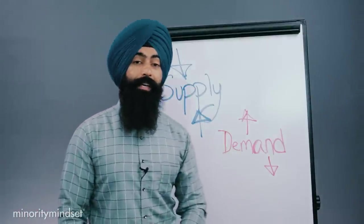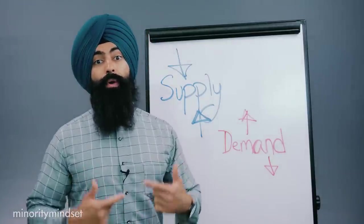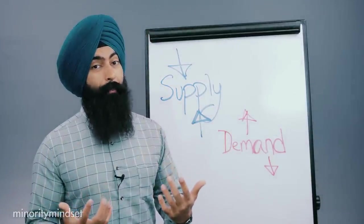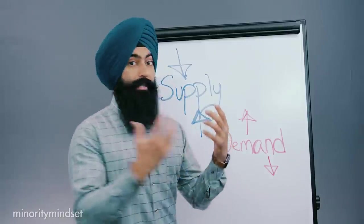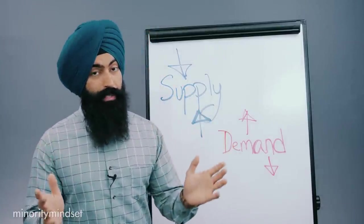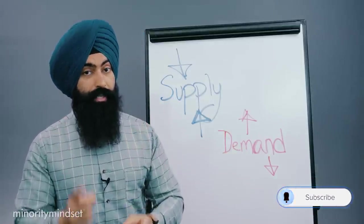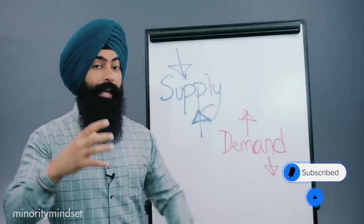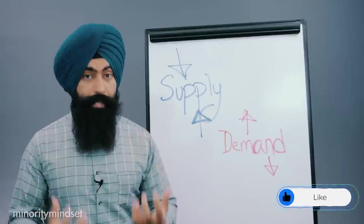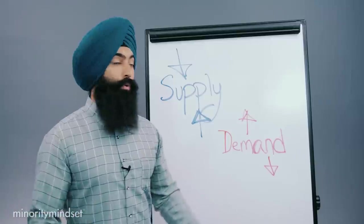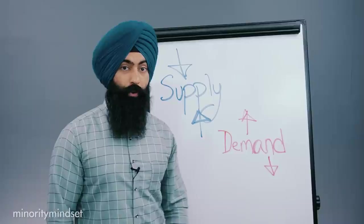Then on the demand side, you want to pay attention to now, how incentivized are people to go out and buy a home. Right now, what we're seeing happen is that demand is falling because interest rates keep going up. The Federal Reserve Bank is raising interest rates to fight inflation. And they say that inflation is their number one concern. And so if the Fed continues to raise interest rates aggressively to fight inflation, that's going to continue to push demand down for homes.